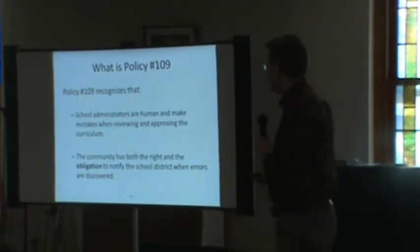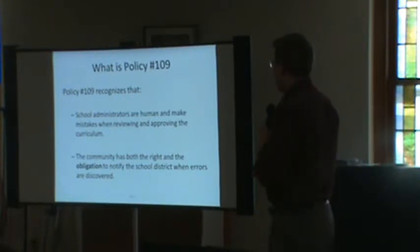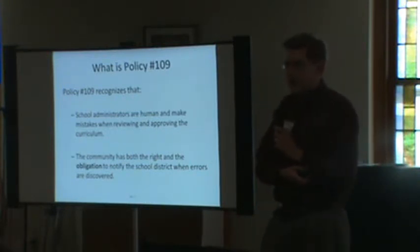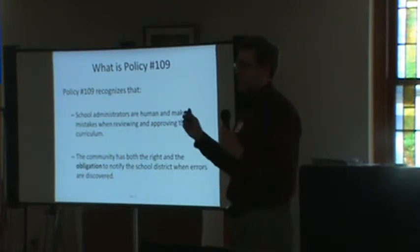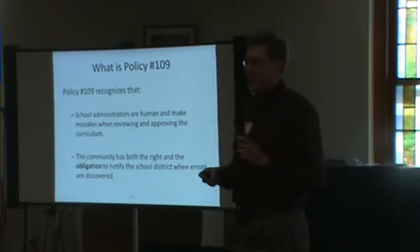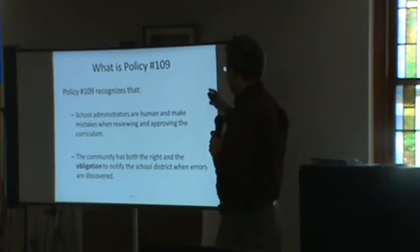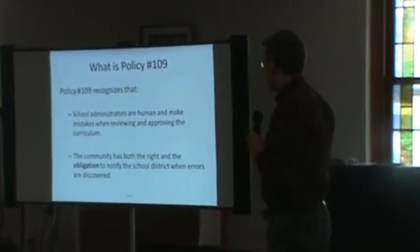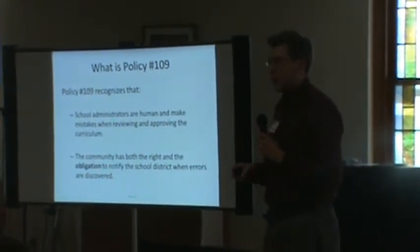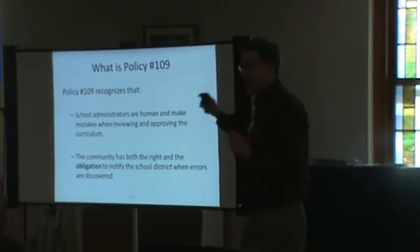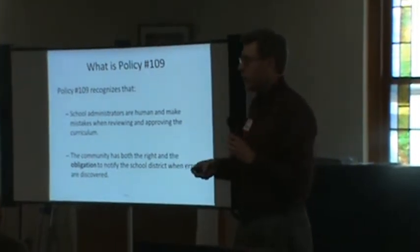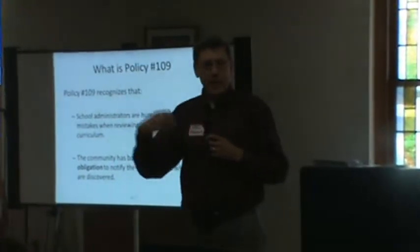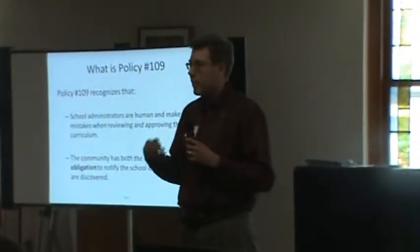Policy 109 recognizes that school administrators are human, and therefore they make mistakes when they review and approve material for the curriculum. Not every single resource material in the curriculum is perfect — there are mistakes. Policy 109 recognizes that the community has both the right and the obligation to notify the school district if errors are discovered. This is all part of a social contract. With public schools, we basically agree to hand them our money — we're giving up some liberty — but in exchange, they have to follow some rules.